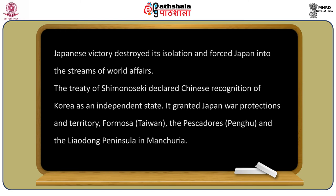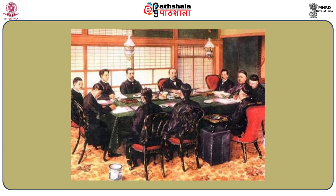Japanese victory destroyed its isolation and forced Japan into the mainstream of world affairs. The Treaty of Shimonoseki declared Chinese recognition of Korea as an independent state. It granted Japan war reparations and territory: Formosa (Taiwan), the Pescadores (Penghu), and the Liaodong Peninsula in Manchuria.